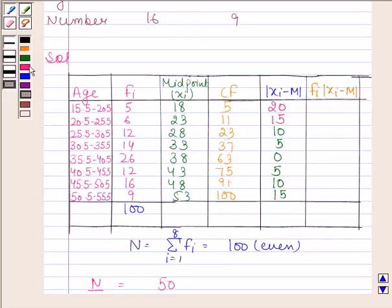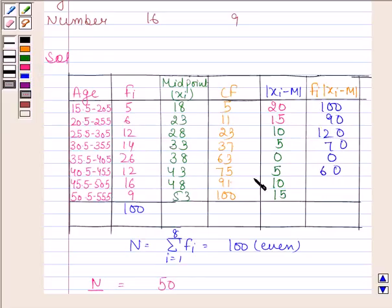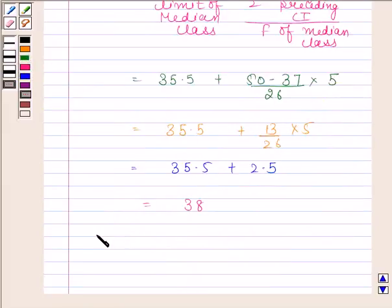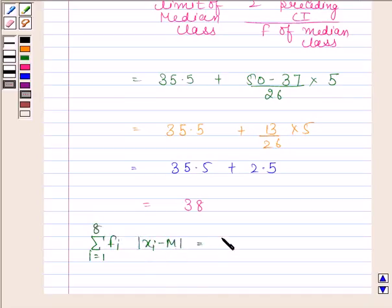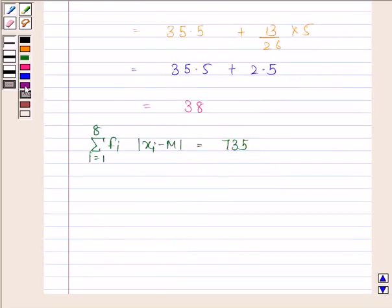Now we will find Fi × |Xi − M| for each row: 5 × 20 = 100, 6 × 15 = 90, 12 × 10 = 120, 14 × 5 = 70, 26 × 0 = 0, 12 × 5 = 60, 16 × 10 = 160, 9 × 15 = 135. On adding all of these, we get the summation of Fi × |Xi − M|, for i from 1 to 8, equal to 735.